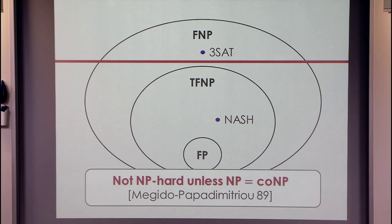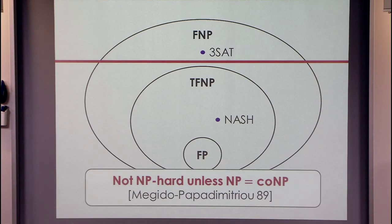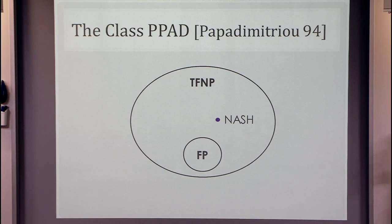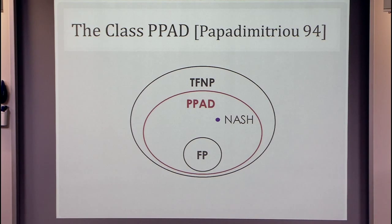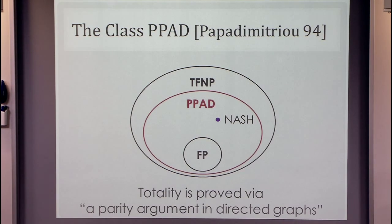Maybe we can try and prove that Nash is complete for TFNP. The problem is that we don't really know how to prove completeness for TFNP — we don't even know if this class contains complete problems. A suggestion by Papadimitriou is to instead study large subclasses of TFNP, grouping together problems according to the type of combinatorial argument used in their proof of totality. Today we're going to focus on one of these subclasses called PPAD, which is closely related to the complexity of Nash. Very roughly, PPAD contains total search problems where totality is proven via a parity argument in directed graphs.